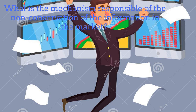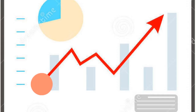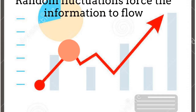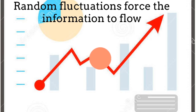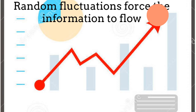This means that the information cannot be preserved in general. But why is it the case that the information is not preserved in the stock market? The main reason for the non-preservation of the information comes from random fluctuations. Random fluctuations appear in the stock market because the variables involved are stochastic. These fluctuations appear even if the system is in equilibrium.